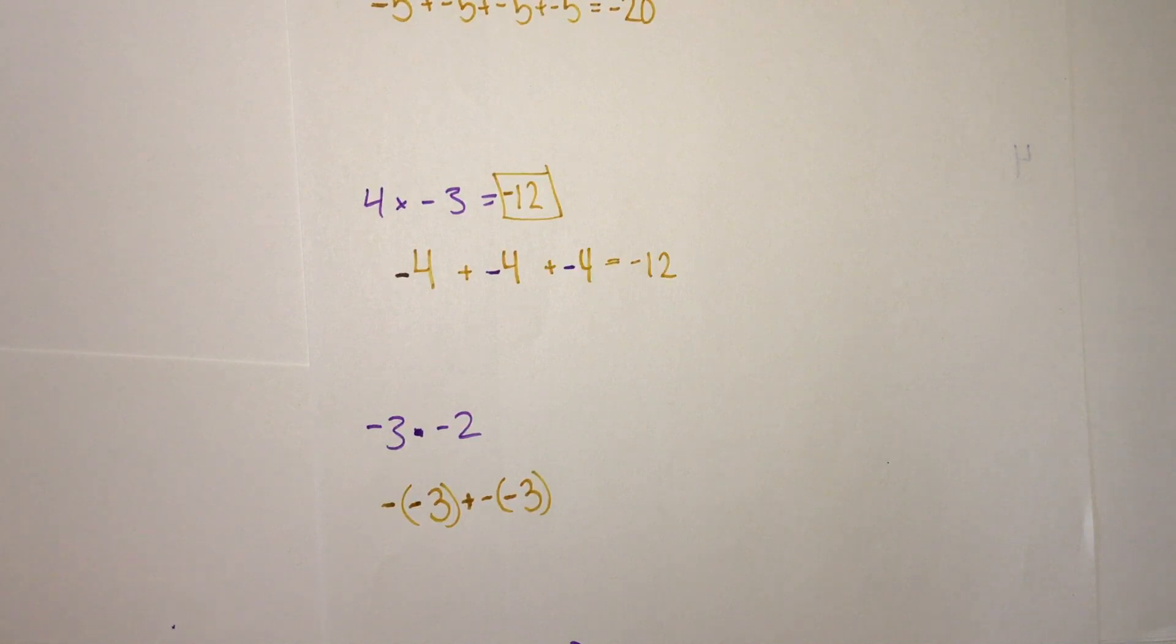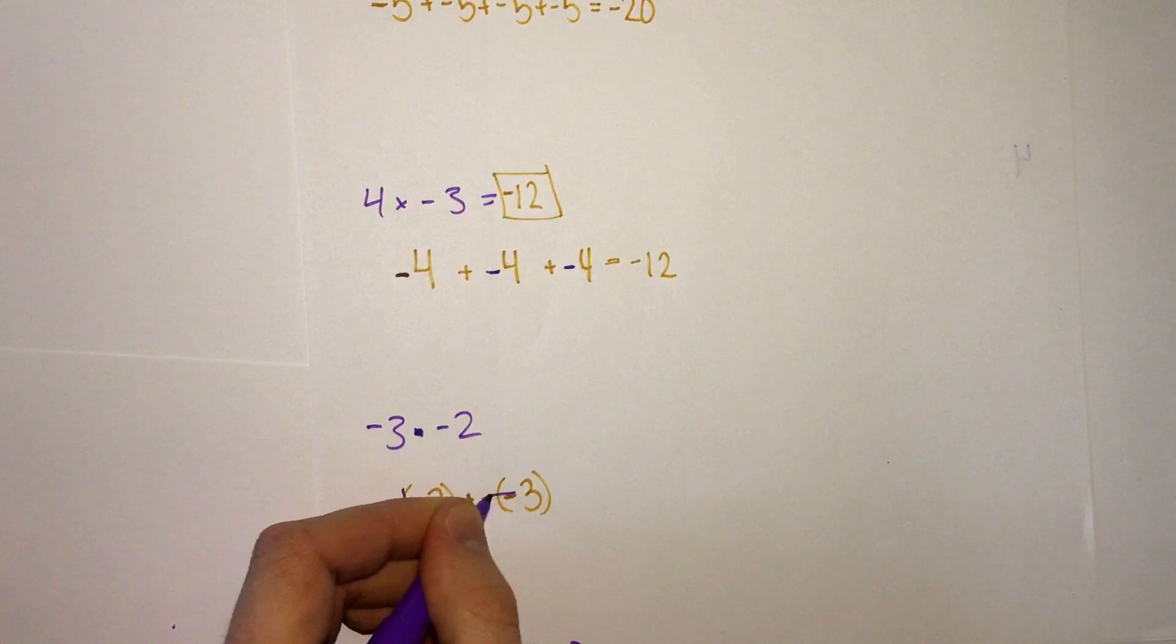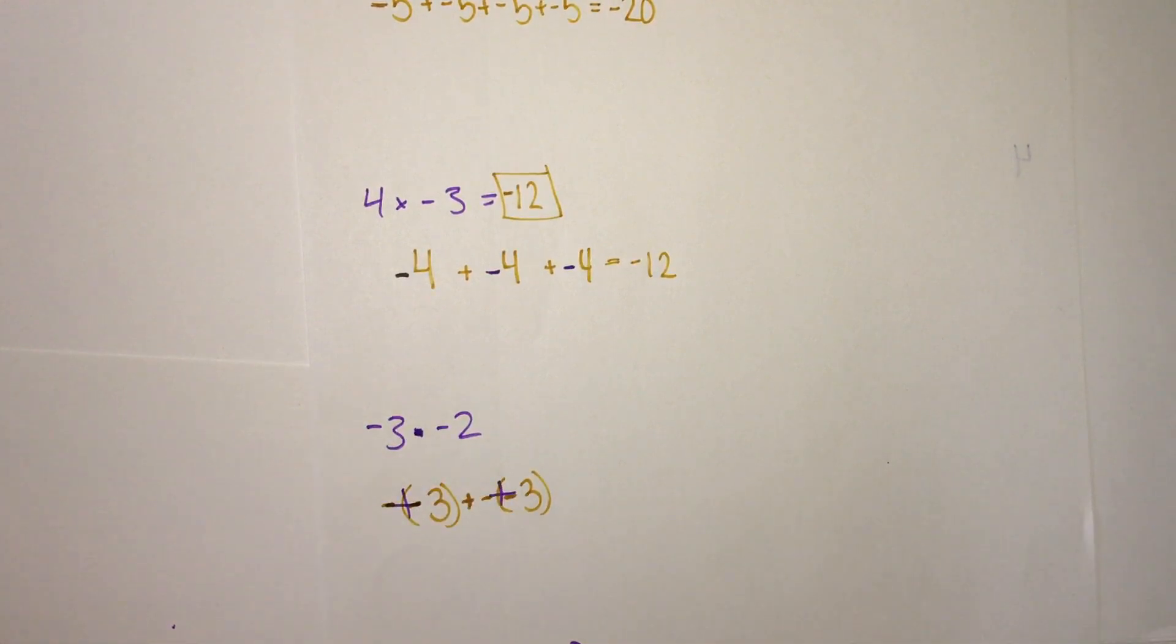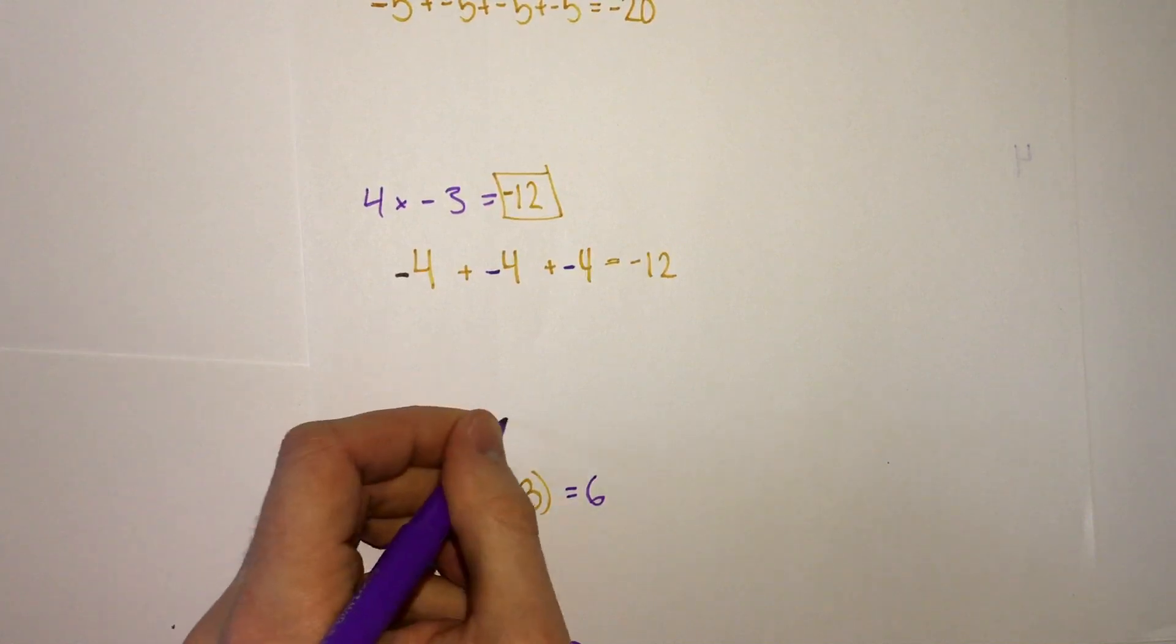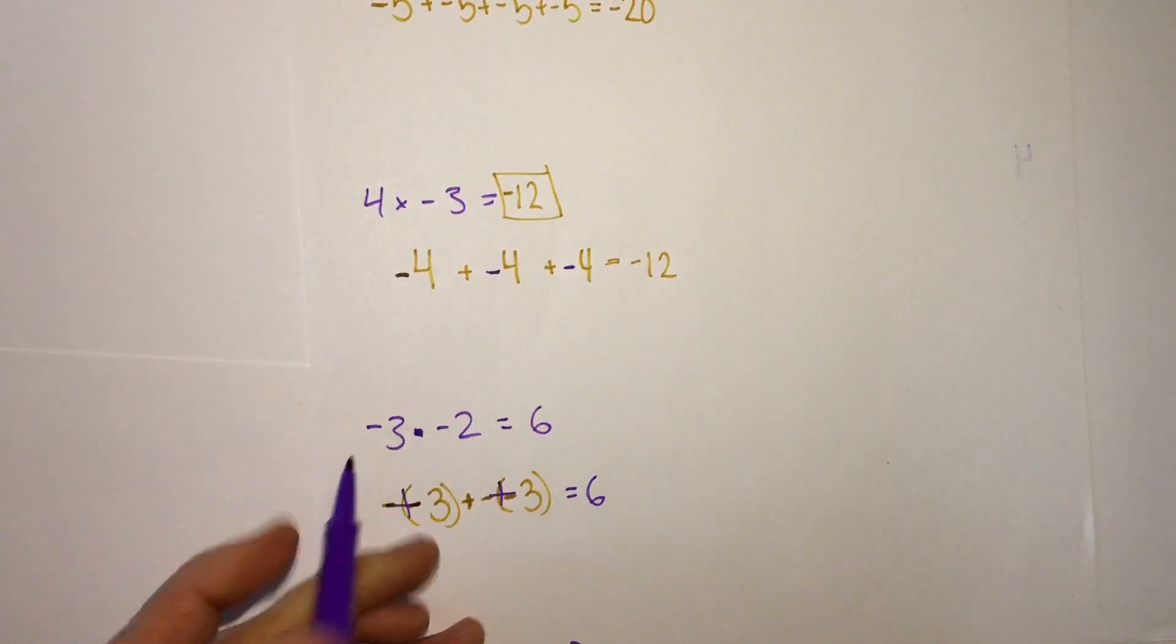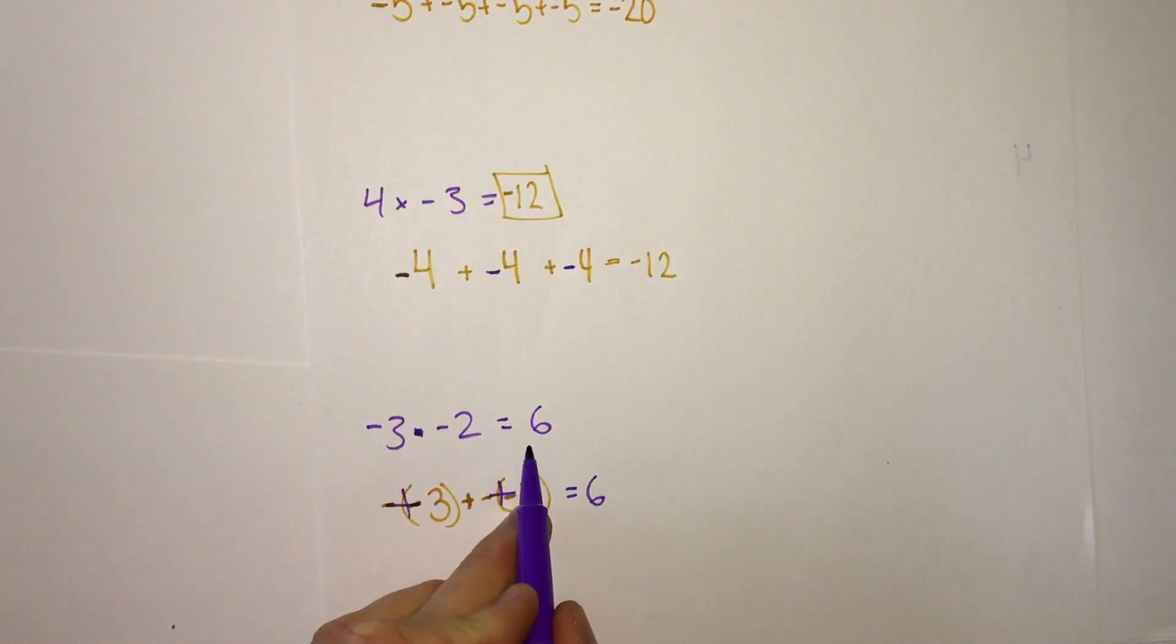If we think back to the subtraction one, when we have two negatives, those become positives. So this just becomes 3 plus 3 is 6. 3 times 2 is 6. Negative 3 times negative 2 is 6.